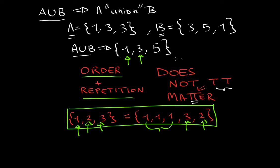Order — you could have the elements in any order you want, and you can repeat them however many times you want. As I have shown here, these two sets are equivalent: {1, 2, 3} is the same as {1, 1, 1, 3, 2}. I repeated 1 three times and switched the order of 3 and 2. So repetition and order do not matter, for sets at least.